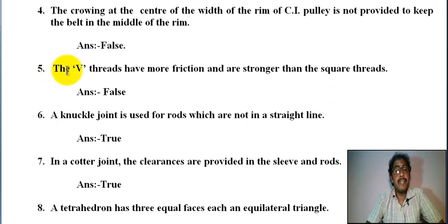Number five: the V thread have more friction and are stronger than square thread. It is also false. Square thread is stronger and more friction.